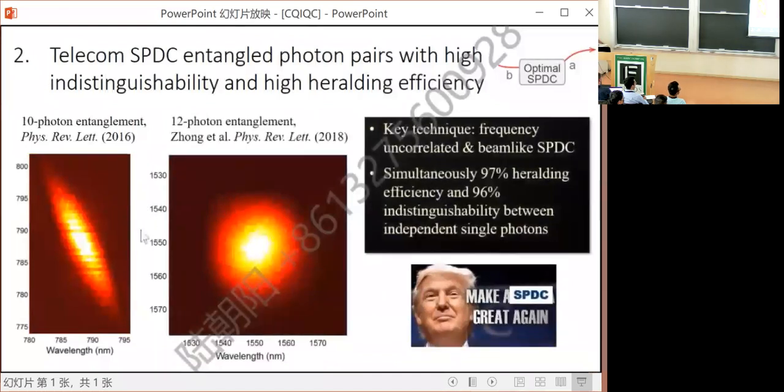Finally, there's unwanted spectral correlation, which you can see from the joint spectral correlation. Phase matching here should be adjusted so that it becomes circular, which means the frequency is uncorrelated. In 2018, we created SPDC source with simultaneously 100 percent efficiency and indistinguishability.